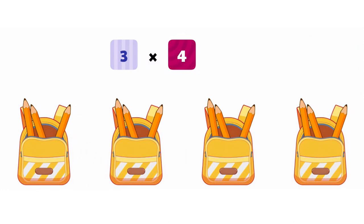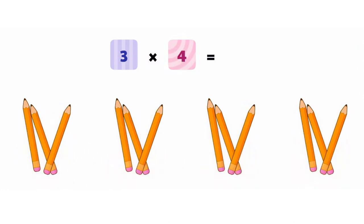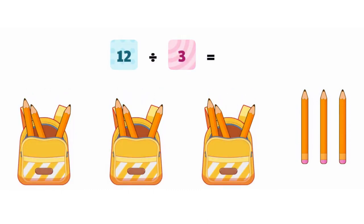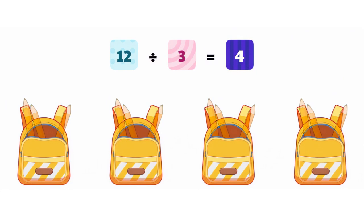When we multiply, we're making equal groups of a number to get a total. And when we divide, we're taking a total and sorting it into some number of equal groups. The better we understand how multiplication and division can work, the more flexibly we can think about them.